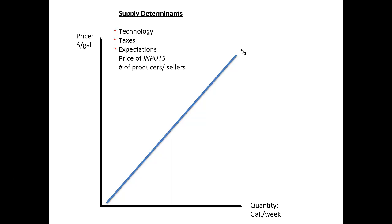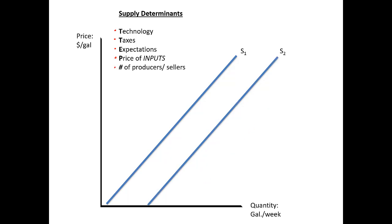So if there's a new production technology that lowers the cost of producing a good, we can shift the supply curve to the right. If there's an increase in taxes on certain kinds of businesses, that will shift the supply curve for the products they produce to the left, and so on. Here's what that looks like.